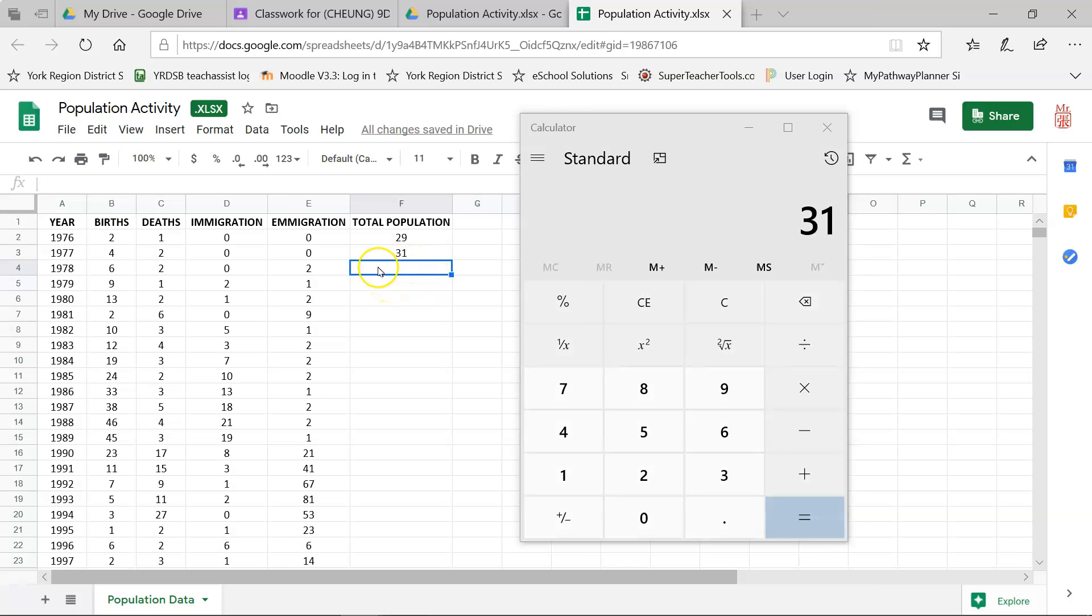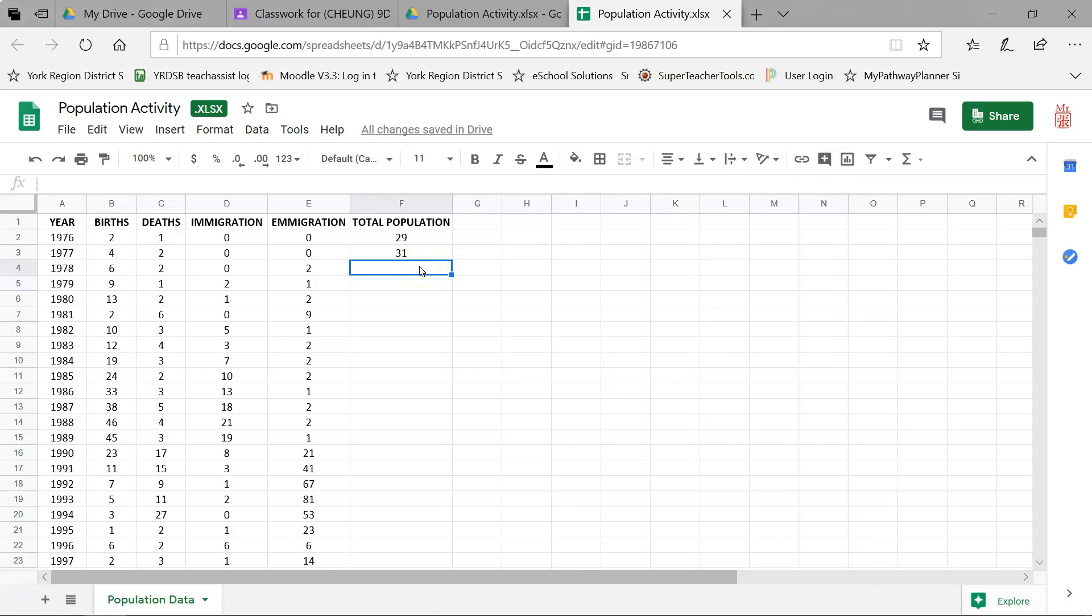Alright, so let's see how you did. We start off with 31 reindeer at the end of 1977. But during 1978, we had six that were born. So plus six. We had two that died. So minus two. Zero immigration. So if you want to, you can write down plus zero. But two emigration. So two reindeers left this area. So minus two. Equals 33. So I'm going to type that in. 33. And I can move on to the next one.